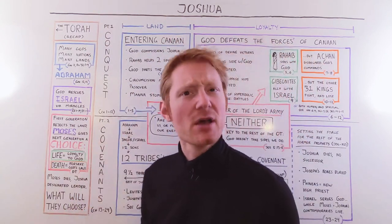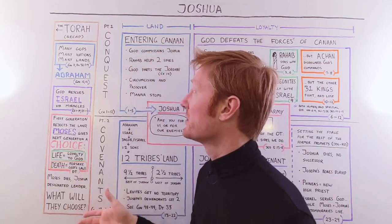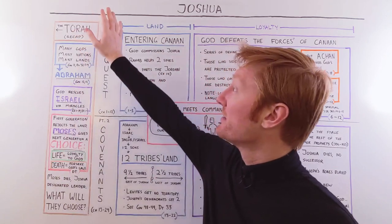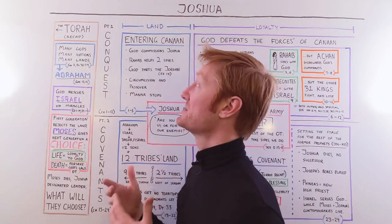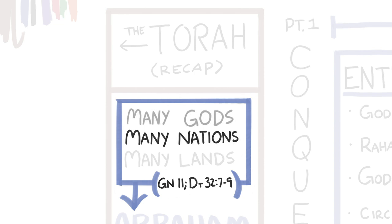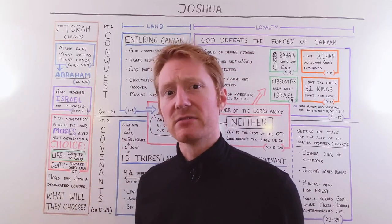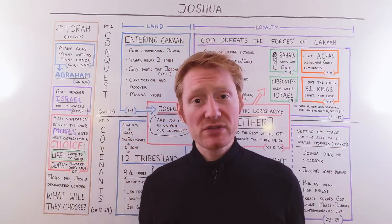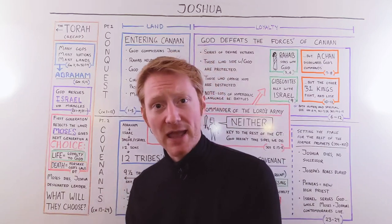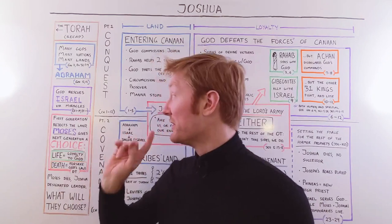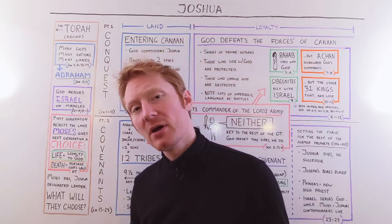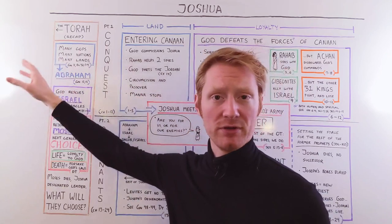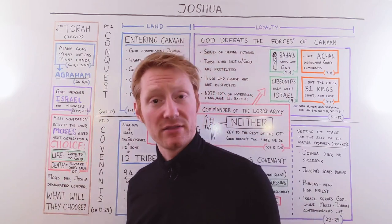Joshua begins with the death of Moses, who died at the end of Deuteronomy. In the book of Genesis, there are many nations with their own gods and their own lands. Out of all these nations, the God that becomes the God of Israel chooses a man named Abram, changes his name to Abraham, and promises that through him his descendants will inherit a promised land, and that through Abraham all the nations of the world will be blessed.